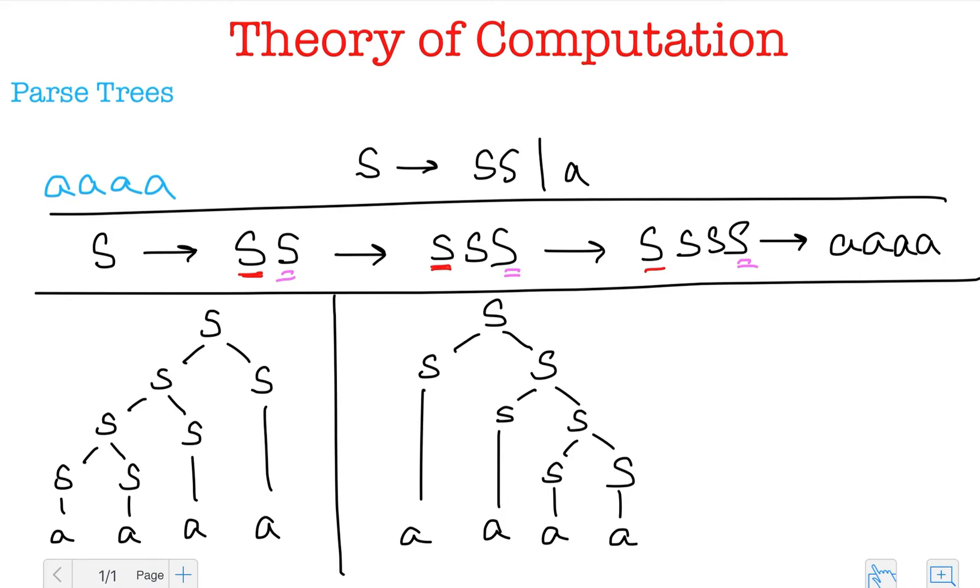So this is the rightmost derivation tree that I get and in the last video I talked about ambiguous and unambiguous grammars. So in case of an unambiguous grammar what's going to happen is the leftmost and the rightmost derivation trees are going to look exactly the same because as I said for an unambiguous grammar I can have just one parse tree or one derivation tree. So it's going to look exactly the same. If I have a leftmost derivation tree and a rightmost derivation tree that look different then my grammar is ambiguous. So remember that the example that I've taken here is an example of an ambiguous grammar.